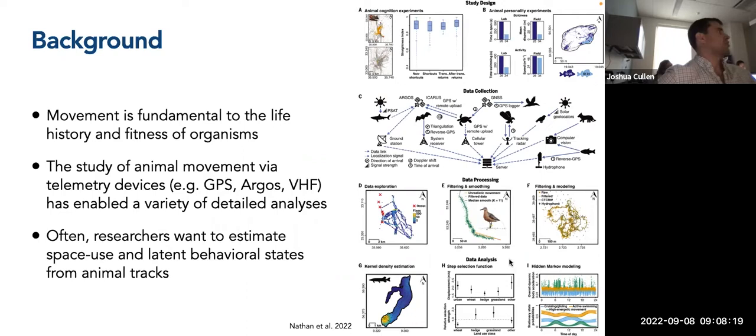So the focus of this workshop is on these first and third topics here at the bottom, space use estimation and behavioral state estimation. And I'm planning to host another workshop, I think the beginning of the spring, where I'll focus more on habitat selection. So we'll cover at least step selection functions in some part of that. But this is a general workflow for how people might investigate different questions in animal movement ecology.